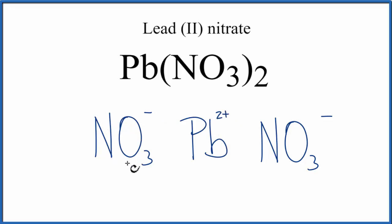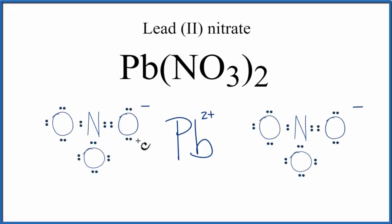Let's change the NO3 here, the NO3 minus to a Lewis structure for the nitrate ion. Next, let's put brackets around this NO3 minus.